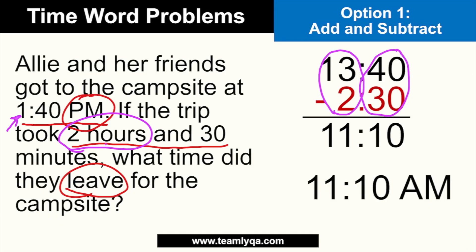That's more complicated because the number on the bottom is bigger. So again, when dealing with time, convert to military time so the hours are always greater than 12 — that way the number on top will always be larger and subtraction will be straightforward.